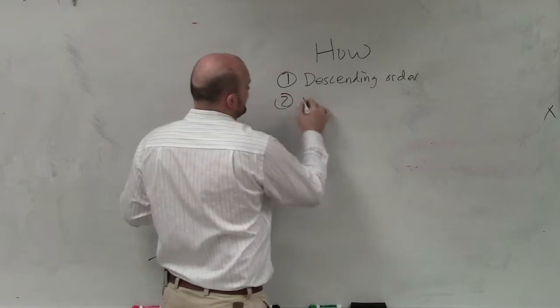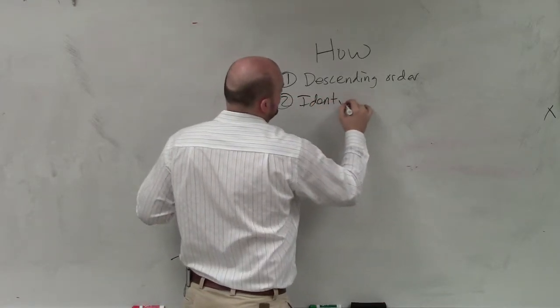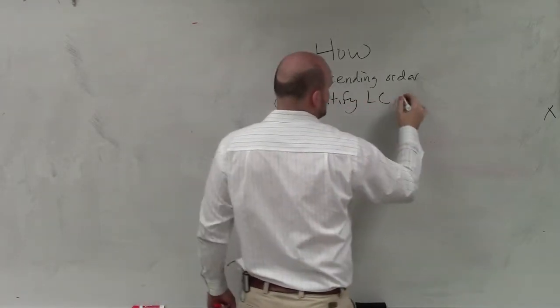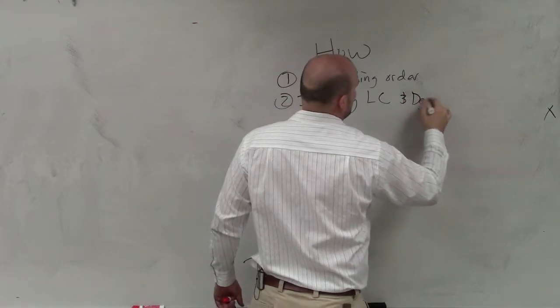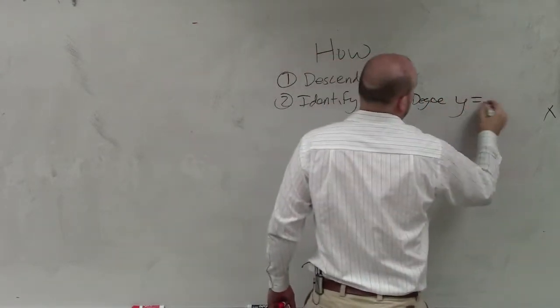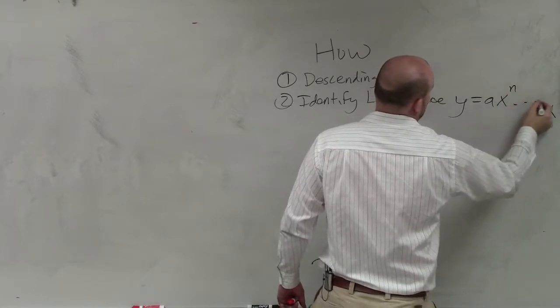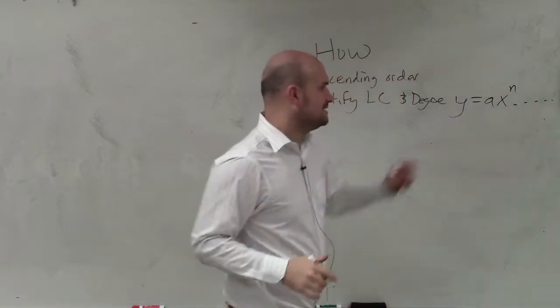The next thing we're going to do is identify the leading coefficient and the degree. Now, again, when we have y = ax^n, so this is your leading term.